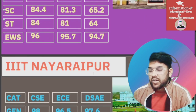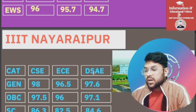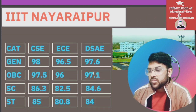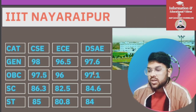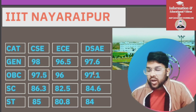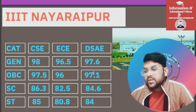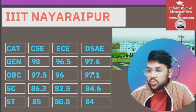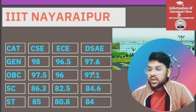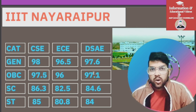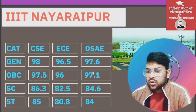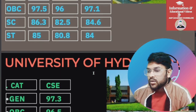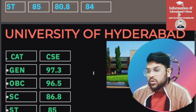For IIIT Raipur, for CSC: General 98, OBC 97.5, SC 86.3, ST 85 percentile. Note that in some colleges there is no reservation for EWS or OBC category — I will inform you about that as well. For other branches you can check slide-wise.